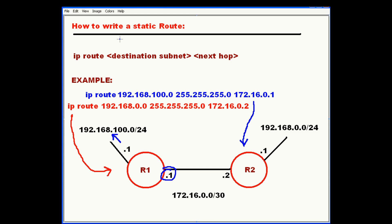The syntax for a static route is IP route, then you issue the destination subnet that your packets are going to, and then you issue the next hop that you're going to forward that traffic to.